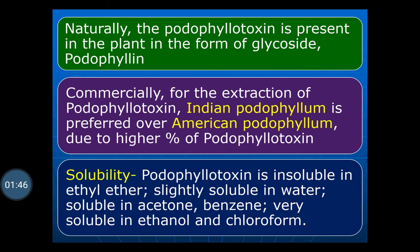Commercially, for the extraction of podophyllotoxin, Indian podophyllum is preferred over American podophyllum due to the higher percentage of podophyllotoxin. The roots and rhizomes obtained from Indian podophyllum are used because of this high percentage. Solubility: podophyllotoxin is insoluble in ethyl ether, slightly soluble in water, soluble in acetone and benzene, and very soluble in ethanol and chloroform. This solubility is useful during extraction.